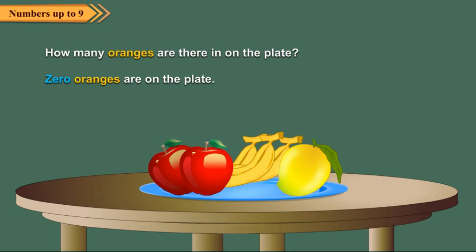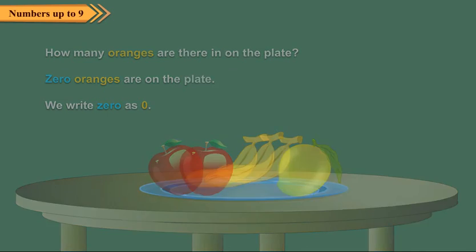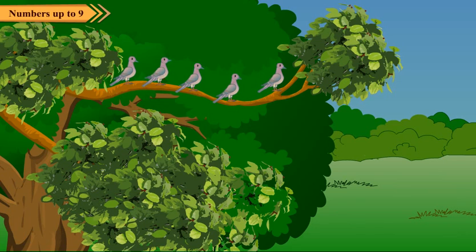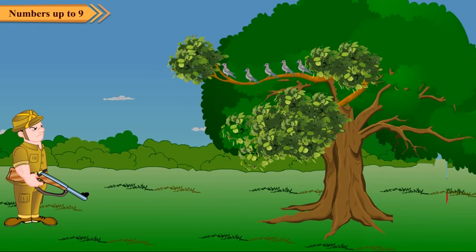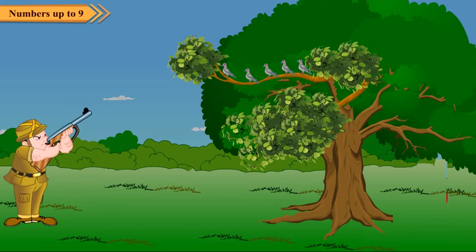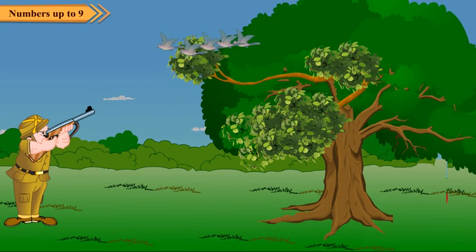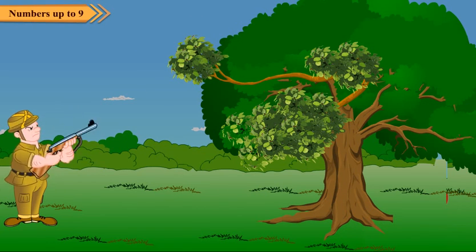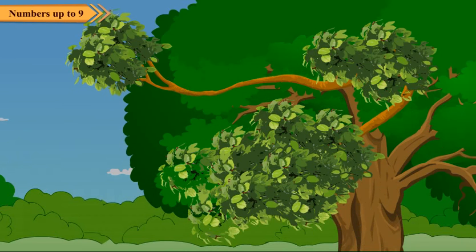So, absence of something is denoted by zero. Five birds were sitting on the branch. A hunter fires. All birds flew away. Now, zero birds are sitting on the branch.